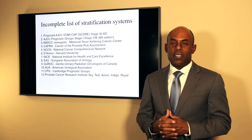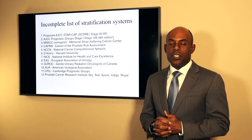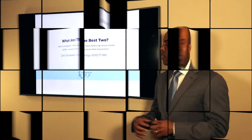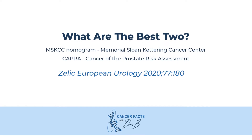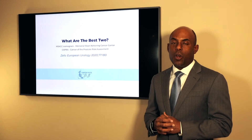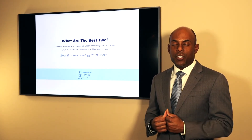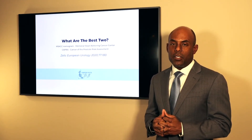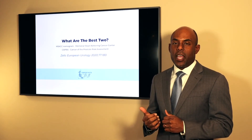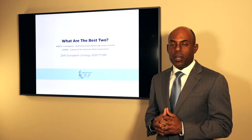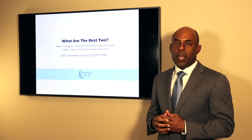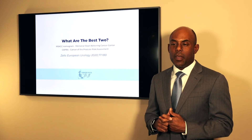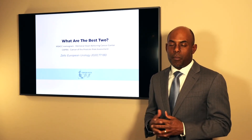Some of these prognostic or stratification systems are just for surgery, and some of them are for both surgery and radiation therapy. Based on a study published in European Urology this year, the best two are the Memorial Sloan Kettering Cancer Center Nomogram, which was developed from patients treated with surgery at Memorial Sloan Kettering, and the CAPRA score, based on the CAPSURE database, mostly from institutions in California, also looking at surgical outcomes. They both give you information on the chance the cancer will come back after surgery based on PSA, and the chance of you dying from your prostate cancer.